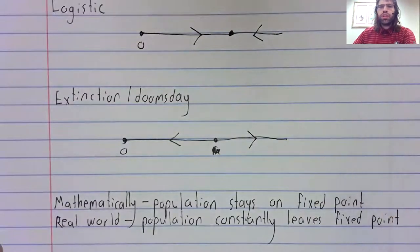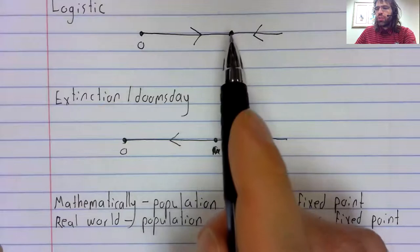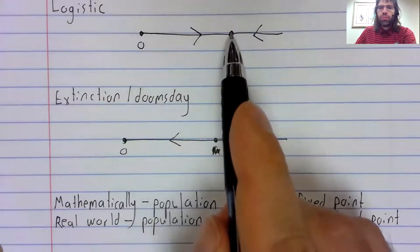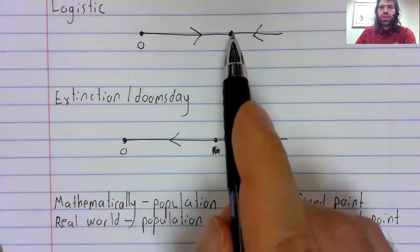In the real world, maybe you have an especially harsh winter and your death rate suddenly increases. That's not predicted by the model, but it's something that can happen in the real world. So, with the logistic model, the population, let's say,